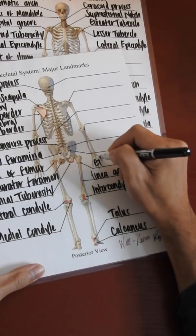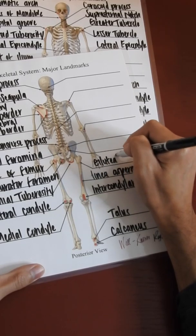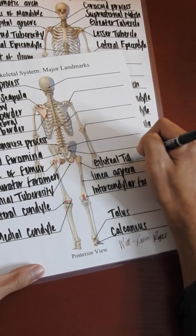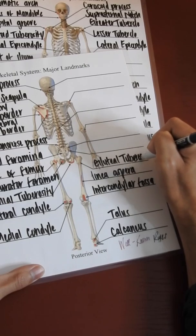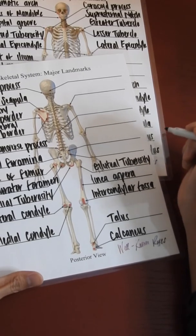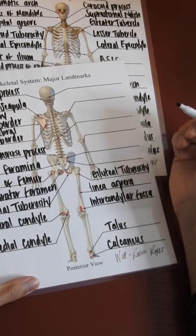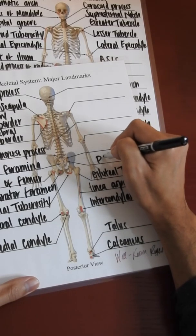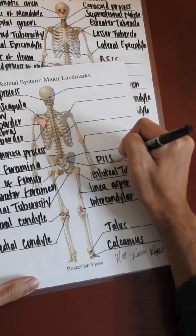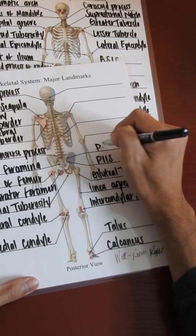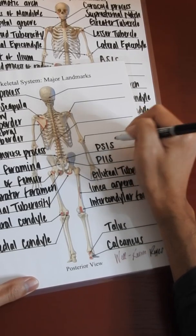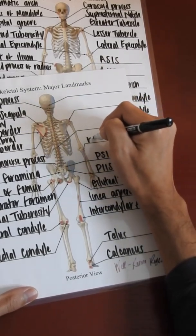We have the gluteal tuberosity, we have the posterior inferior iliac spine, we have the posterior superior iliac spine, and we have the radial head.